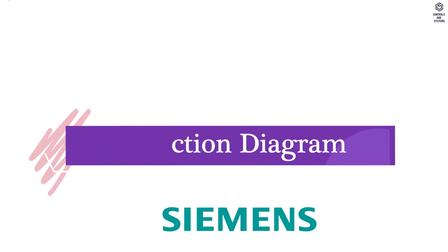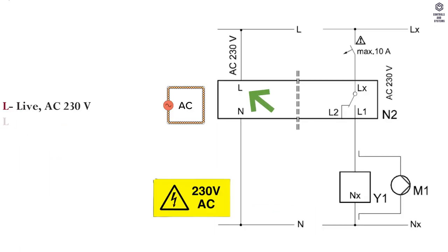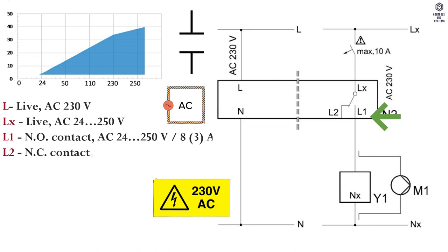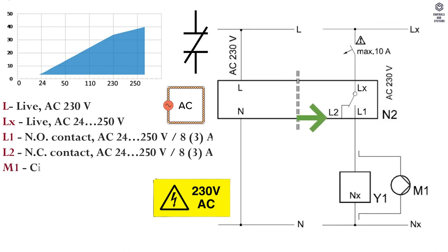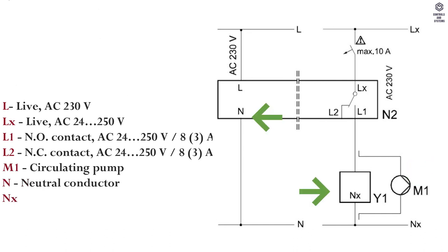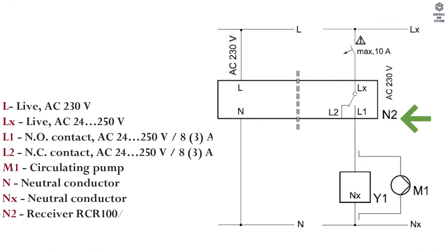Connection diagram: Terminal L is live AC 230V. Terminal LX is live AC 24 to 250V. Terminal L1 is NO contact. Terminal L2 is NC contact. Terminal M1 is circulating pump. Terminals N and NX are neutral conductor. Terminal N2 is receiver RCR100/433. Terminal Y1 is actuating device.